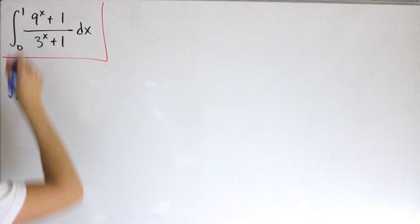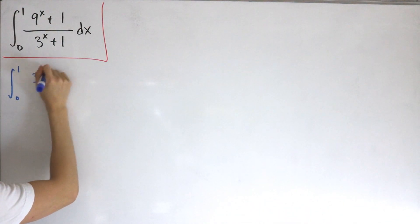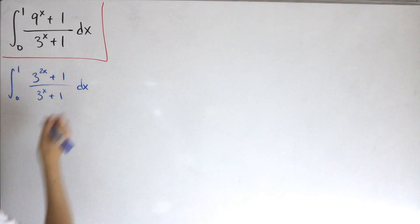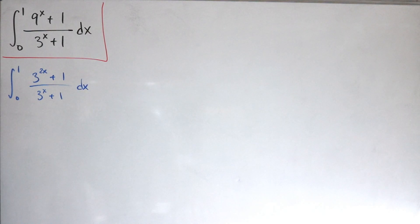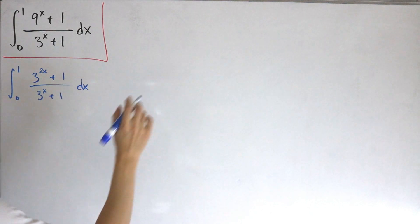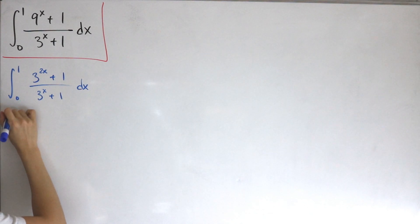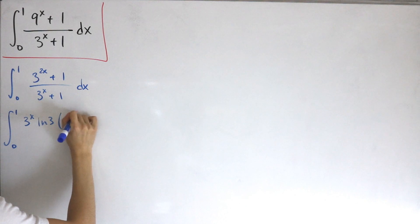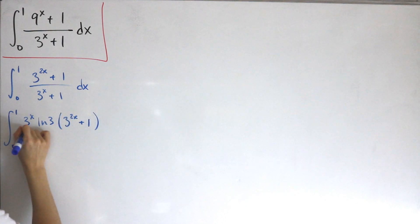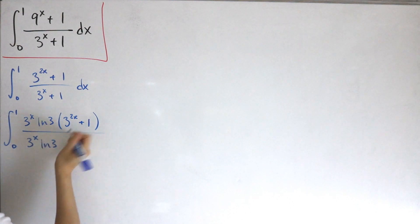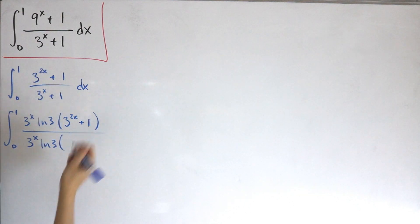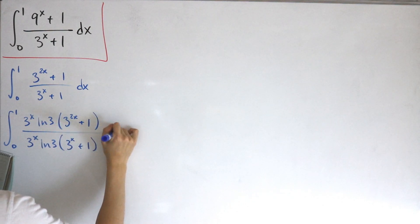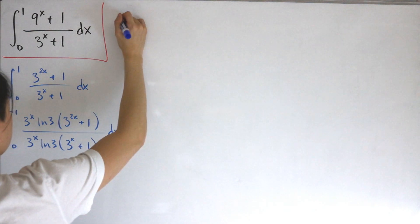As mentioned, we rewrite the integral from zero to one: nine to the power x becomes three to the power two x, so the numerator is three to the power two x plus one, divided by three to the power x plus one, dx. Now here comes the trick — we multiply and divide by three to the power x times ln of three in both the numerator and denominator. This retains the same identity since it's just multiplying by one, just writing things a little differently.